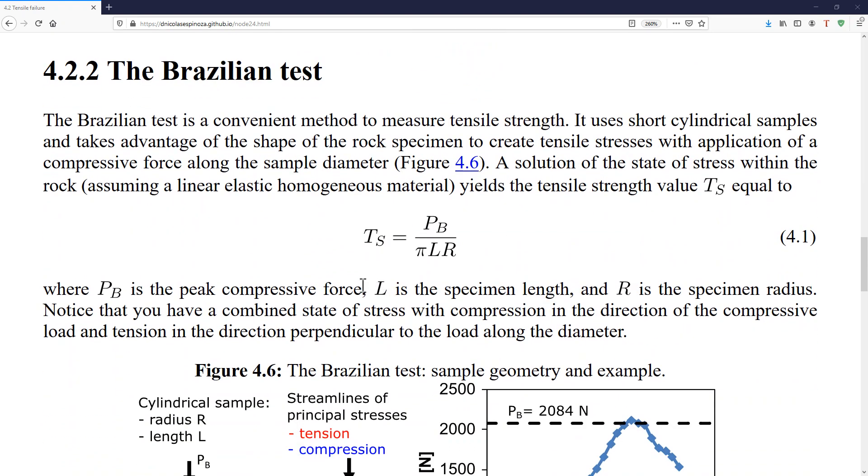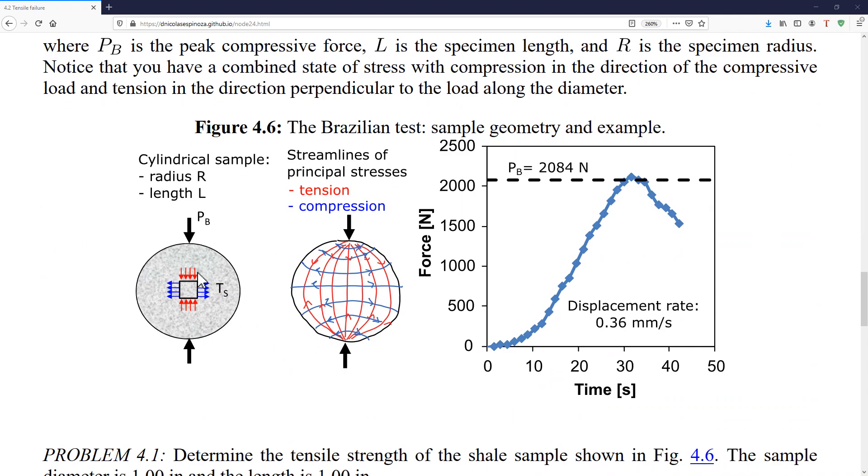what we do is we cut the rock as a cylinder, like this one, here we're just looking at the cross section of that cylinder, and we apply a load along the diameter of the sample. If you were to do that, what you're going to produce is a bending of the principal stresses around the rock as the travel goes from one point to the other, trying to take advantage of all the surface possible in order to transfer that load from one point to the other.